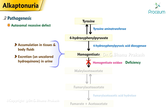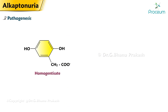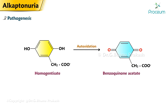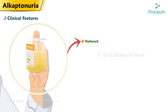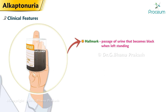This results in accumulation of homogentisate in tissues and body fluids, and excretion of homogentisate — an uncolored hydroquinone — in urine. Homogentisate can be auto-oxidized to benzoquinone acetate, a quinone derivative. The hallmark of the disease is passage of urine that becomes black when left standing, darkening upon exposure to air.